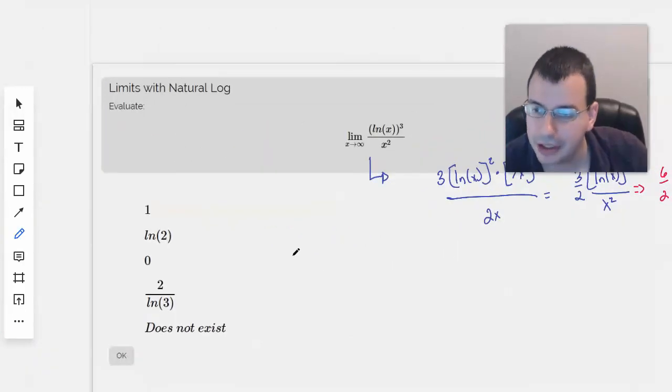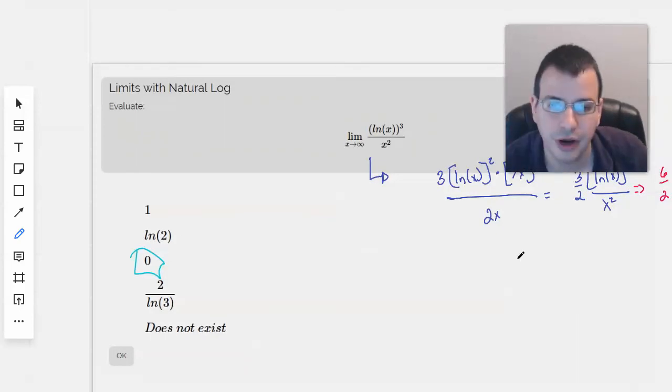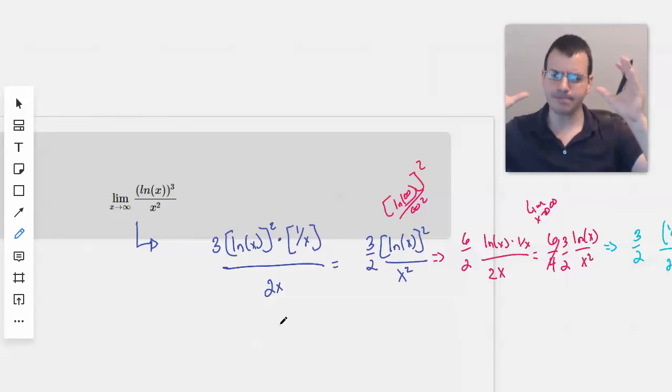So what happened here is we had the indeterminate form infinity over infinity. We took L'Hopital's rule, took the derivative of both top and bottom. We still got another indeterminate form. But the power of our natural log of x kept going down. And we're like, well, if it keeps going down, maybe it'll eventually disappear.